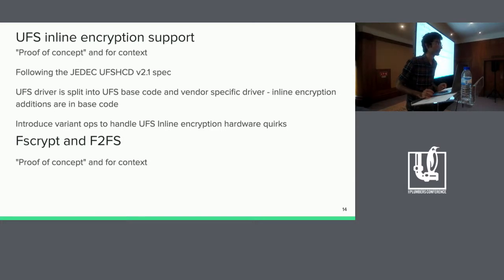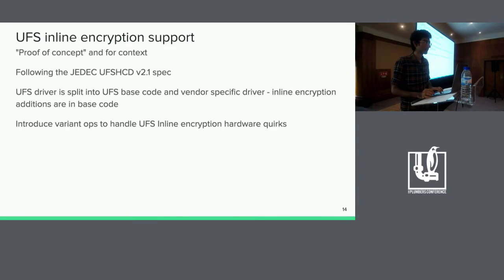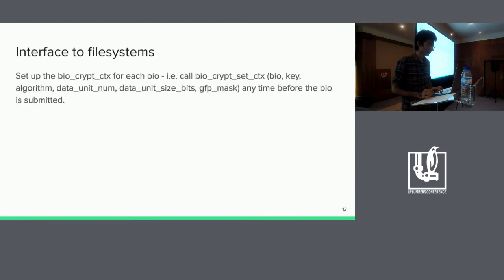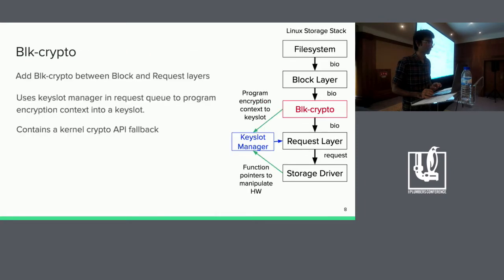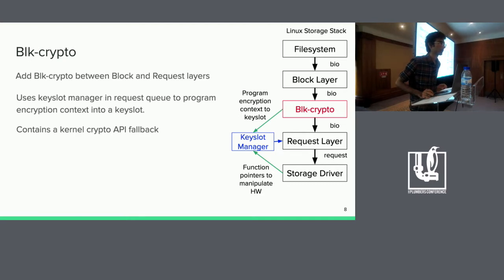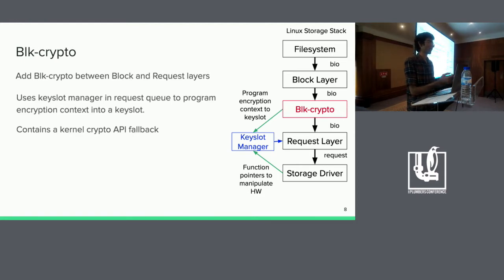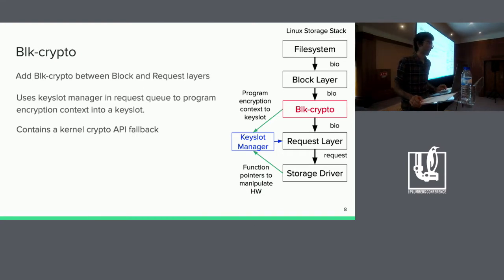Question: You mentioned earlier the request queue and how having one bio encrypted with one context versus another affects request merging. What changes were necessary for the request layer? Answer: The change to the request layer is it now needs to check whether both BIOs have the same encryption context, and if not, don't merge them. The bigger deal was the increase in the size of the struct bio and getting Jens to sign off on the acceptability of that.